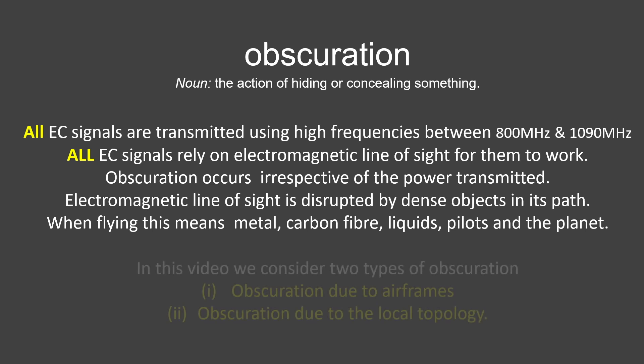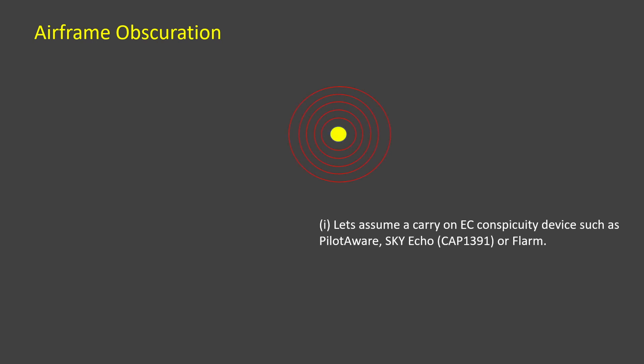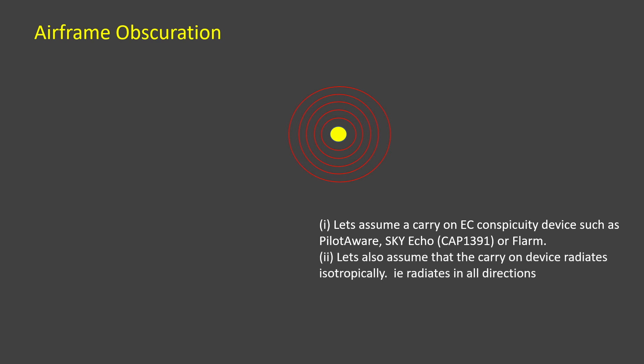In this video we will consider two types of obscuration and how the PilotAware ATOM grid helps to overcome the adverse effects this causes to electronic conspicuity. First, let's look at local airframe obscuration. Let's assume we have a carry-on device of choice — it doesn't matter which brand. Let's also assume that device transmits isotropically, that is, it radiates equally in all directions, like the ripples in a pond when you throw a stone in, but in three dimensions — though that's an approximation.